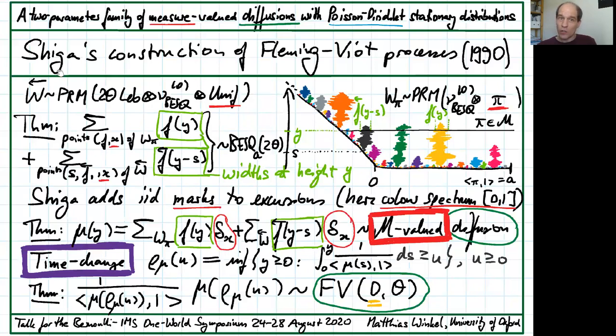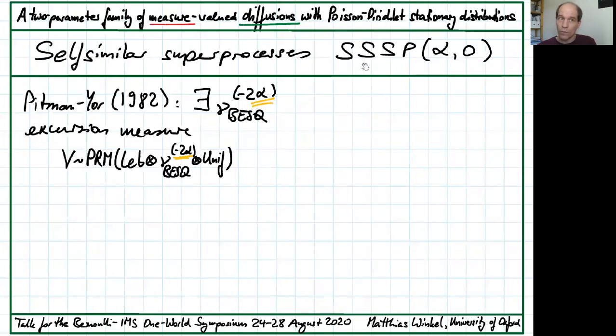Actually, Shiga's construction is much more general, but we need a different generalization. Here we go. We first generalize Shiga's branching diffusion and later change time and normalize. We also start from a squared Bessel excursion measure and associated Poisson random measure, but with dimension parameter minus 2 alpha. We can't just add those up. That will give something, but not what we are after.